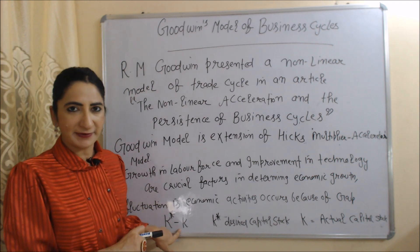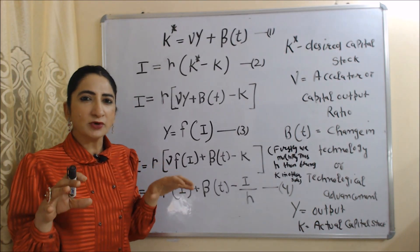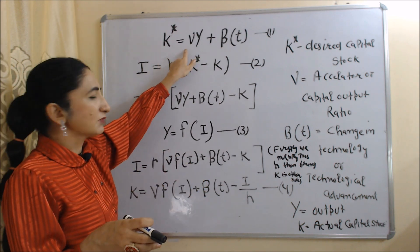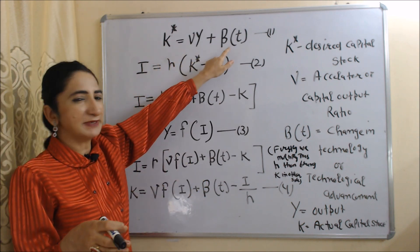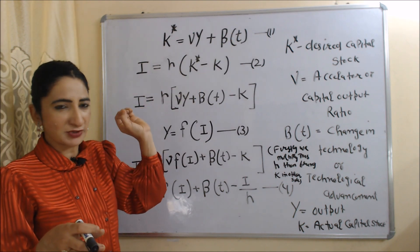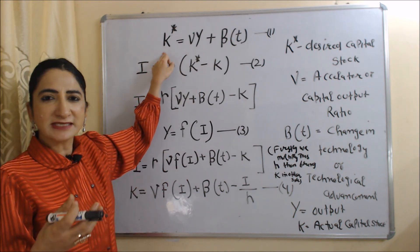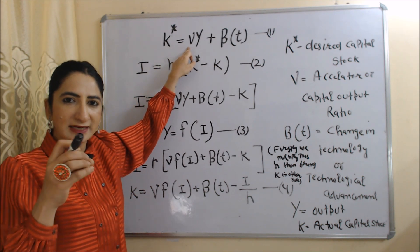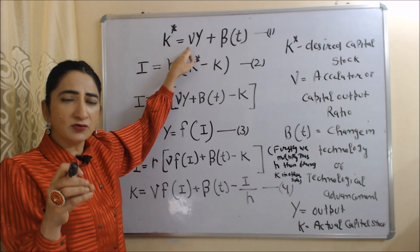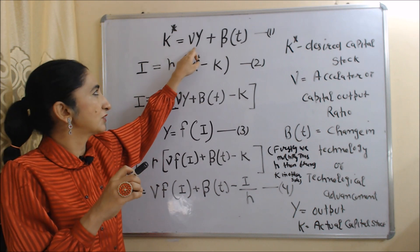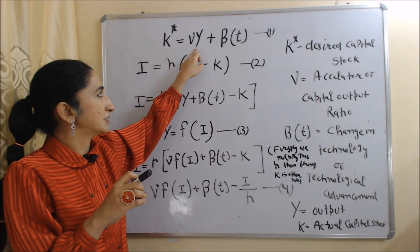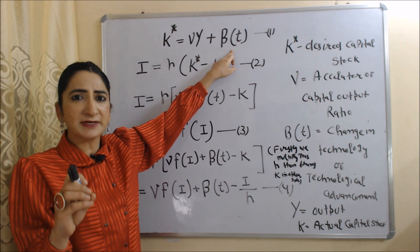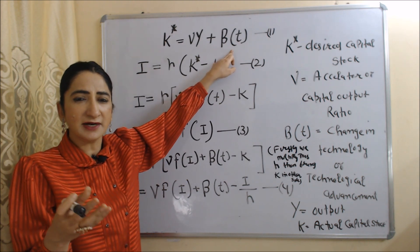Now we are going to talk about the equations of this model. The first equation is: K* = ν·Y + β(t). K* means desired capital stock. ν represents the accelerator, or we can say ν means capital-output ratio. Y is output, and β(t) represents technological change, or we can say β(t) represents technological advancement.